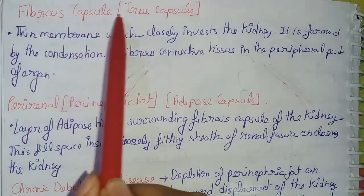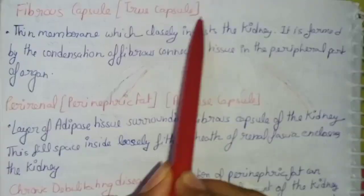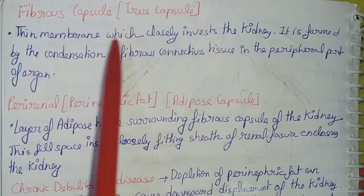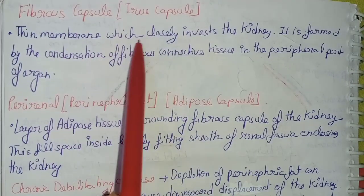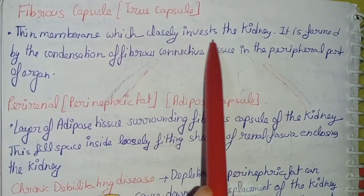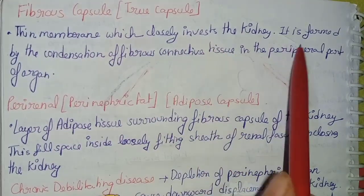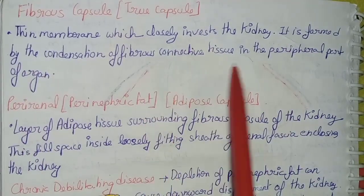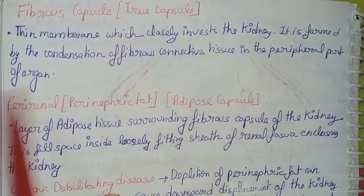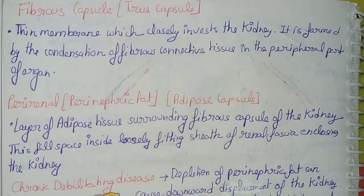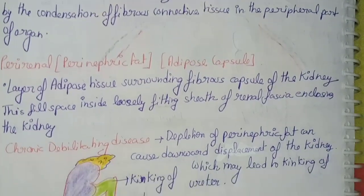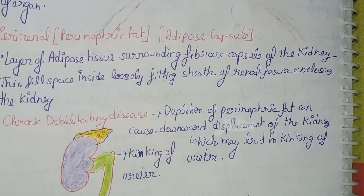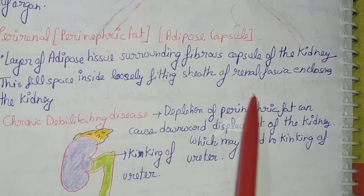The first capsule is the fibrous capsule, also called the true capsule. It is a thin membranous layer that closely invests the kidney. It is formed by the condensation of fibrous connective tissue in the peripheral part of the organ.